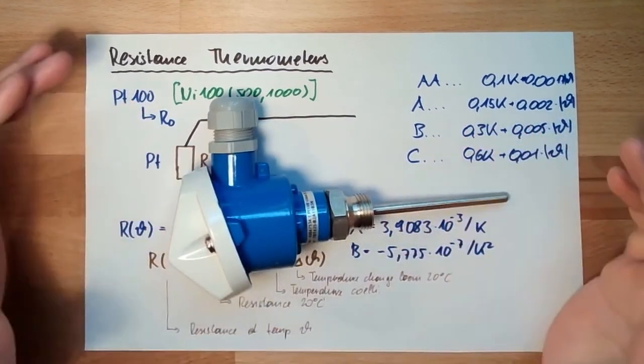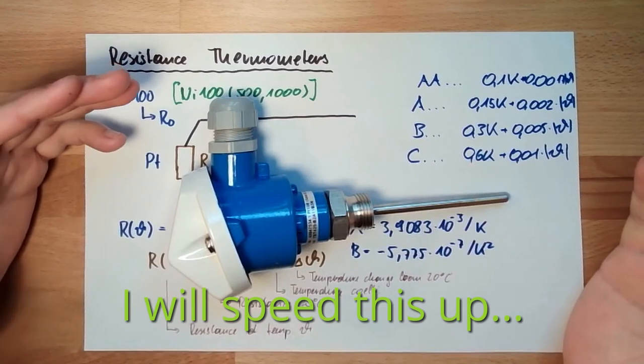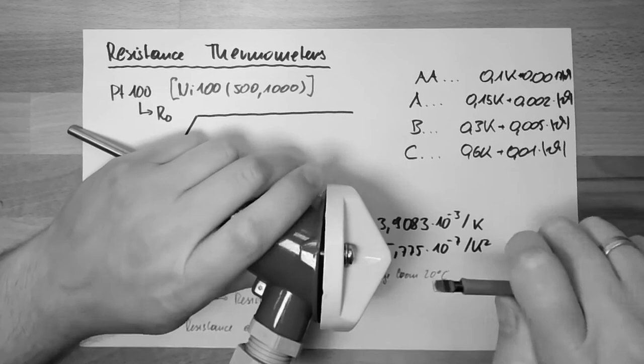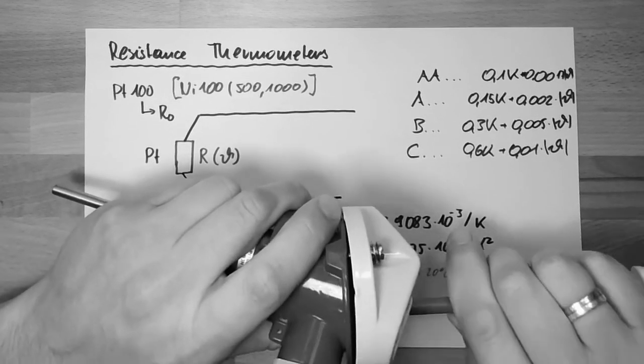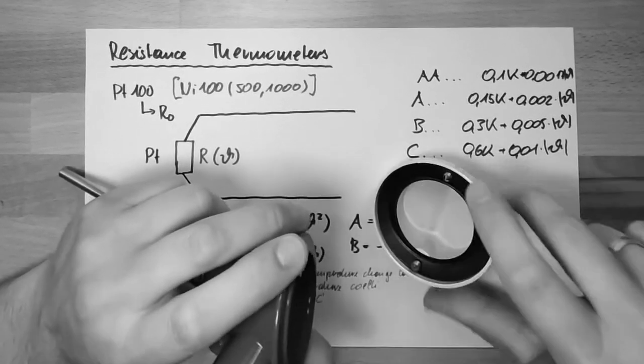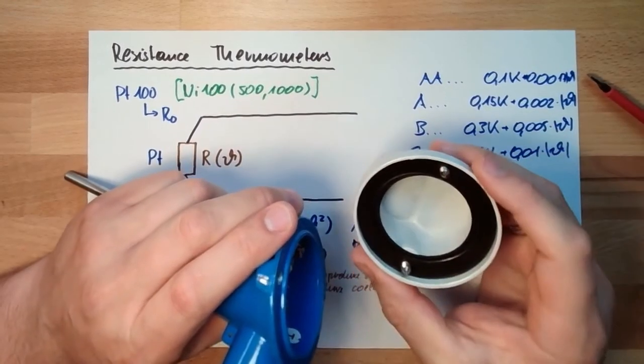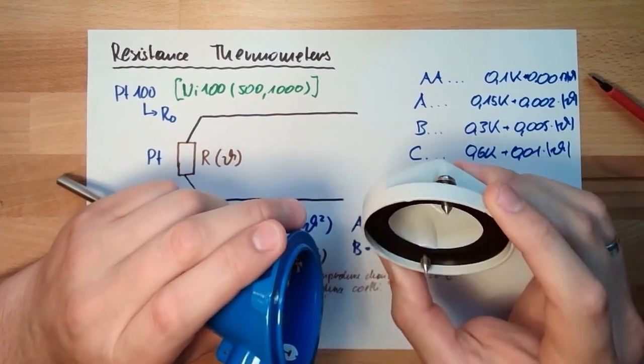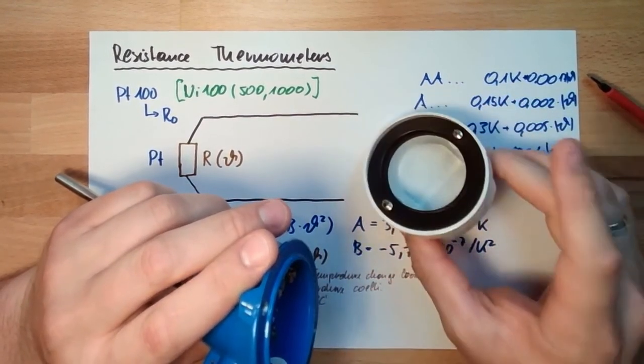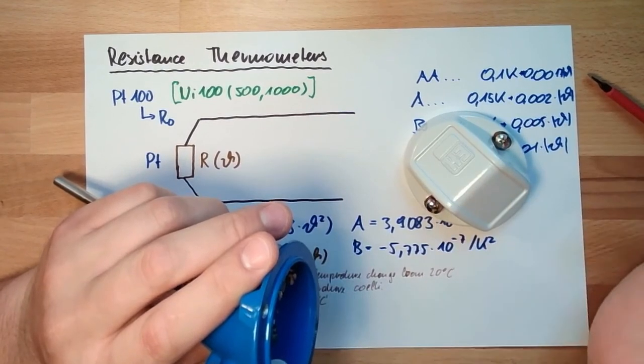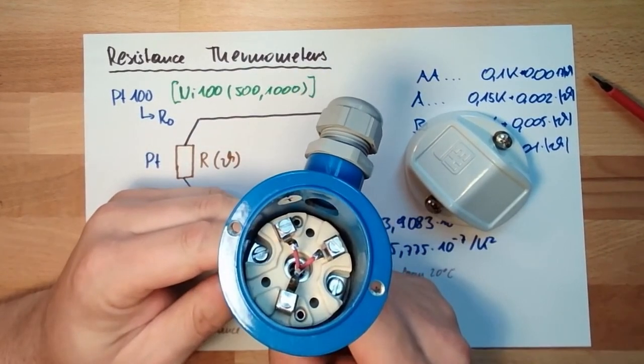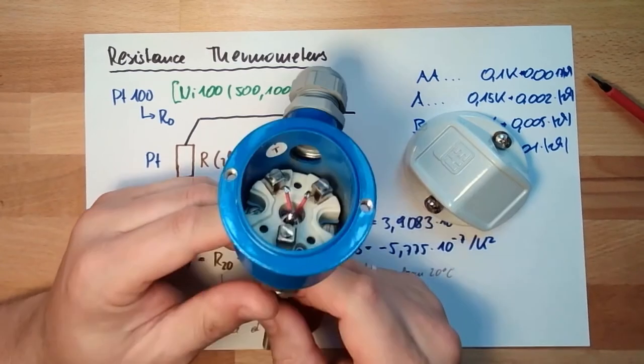These are the classes of the PT100. This is class B thing. I would suggest let's open it, let's look inside. Here you already see there is a seal inside so that no water can get in. This is really a measurement device.